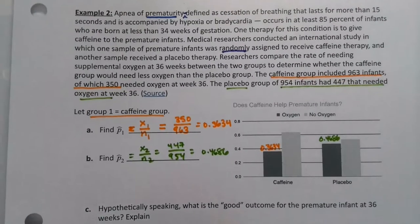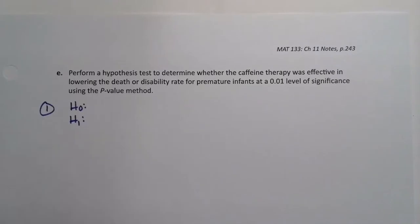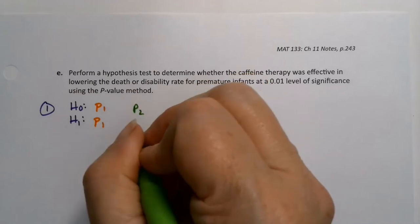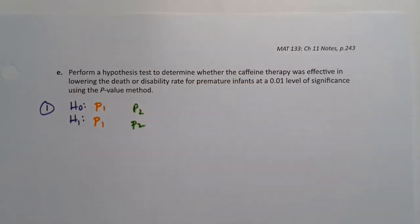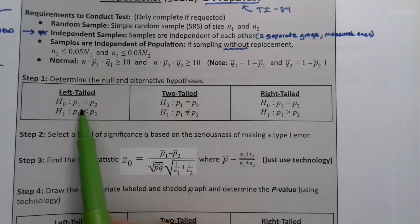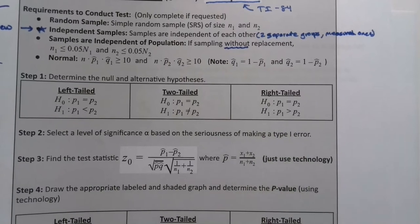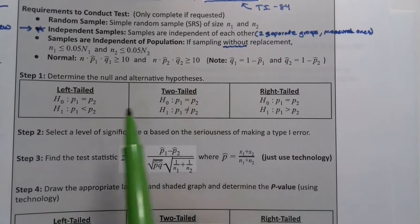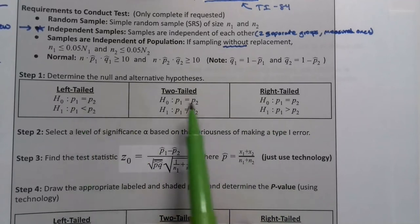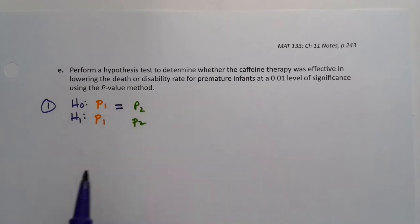Now remember, group one is our caffeine group right here. So if group one is the caffeine group, then we want group one, the proportion from group one, to compare to the proportion from group two. These don't have hats on them because they're the actual proportions of all preemies that would benefit from these therapies or would be in the placebo group versus in the caffeine group. And if you'll notice, one thing that's in chapter 11 that's a little bit easier is it's always like this. It's just p1, p2, p1, p2, p1, p2. Like there's no numbers anywhere. You're not looking through the problem trying to figure out, you know, was it less than 40% or anything like that? Never. It's just a question of what is that second value? Because the null hypothesis always has equals, so that's easy.